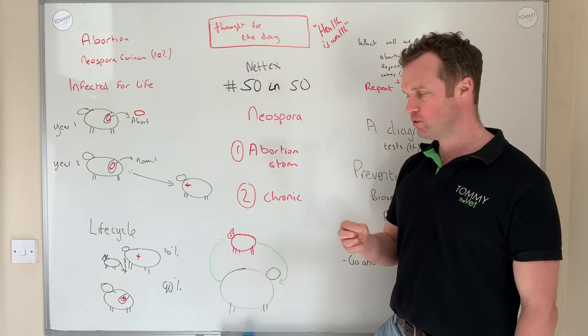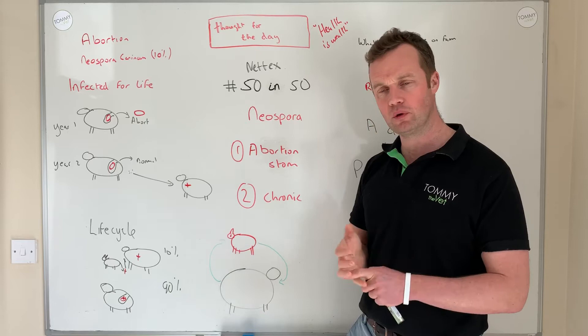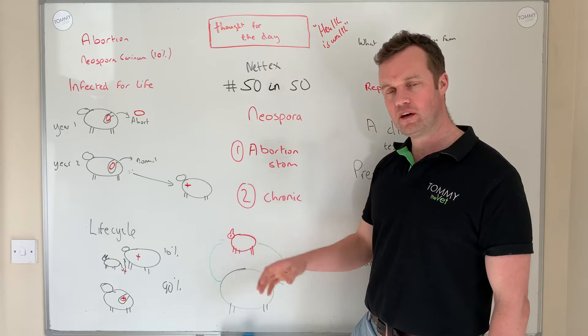If we think about life cycles, the dog plays a key role as the host for the spread of this parasite. What happens is if you have a positive cow and her fetal fluids, placenta, or fetus — the dog eats any of that, particularly the placenta which a farm dog will go after. That dog becomes infected and will pass out oocysts in the feces, continuing that cycle.